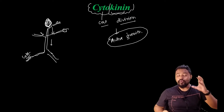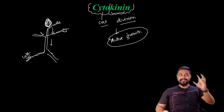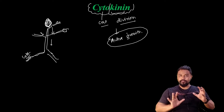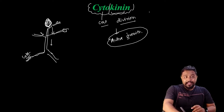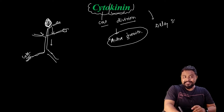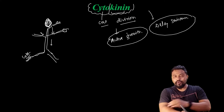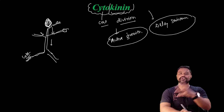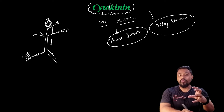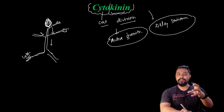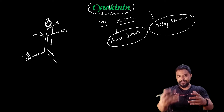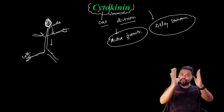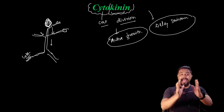This cytokinin role is mainly cell division. It also delays senescence. Senescence means aging — it is a natural process. Cytokinin keeps the plant young.